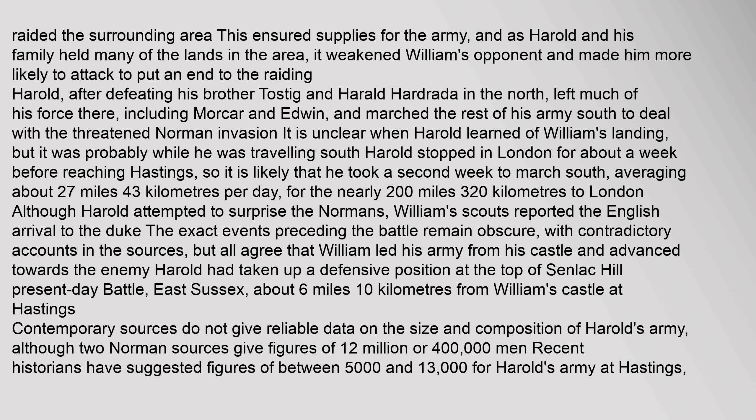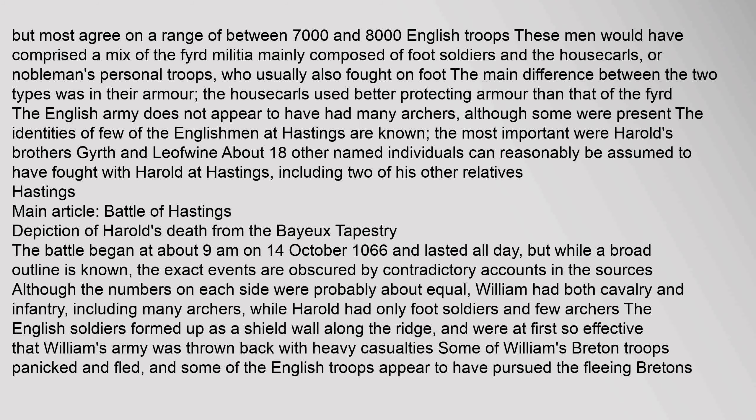The exact events preceding the battle remain obscure, but all agree that William led his army from his castle and advanced towards the enemy. Harold had taken up a defensive position at the top of Senlac Hill, present-day Battle, East Sussex, about 6 miles from William's castle at Hastings. Most sources agree on a range of between 7,000 and 8,000 English troops. These men comprised a mix of the fyrd militia mainly composed of foot soldiers and the housecarls, or noblemen's personal troops, who usually also fought on foot. The main difference between the two types was in their armor.